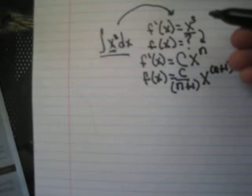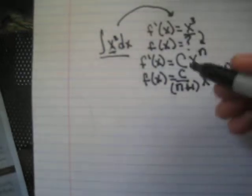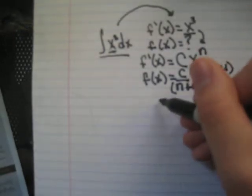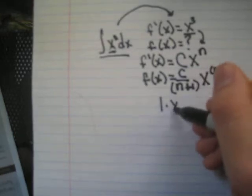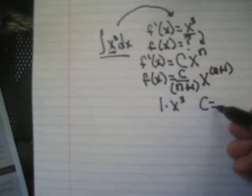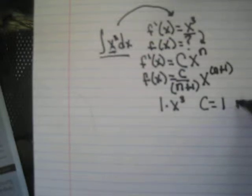So if our function, if we have the derivative as x to the third, and we know the coefficient is really just 1 times x to the third, so we know that c equals 1, and n equals 3.